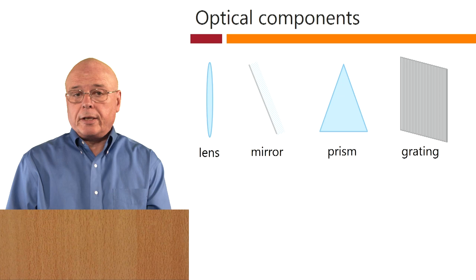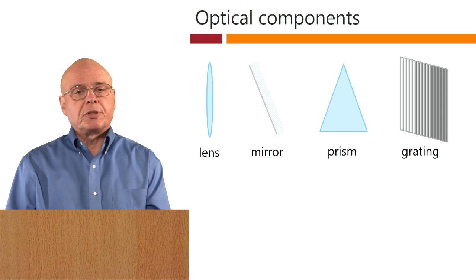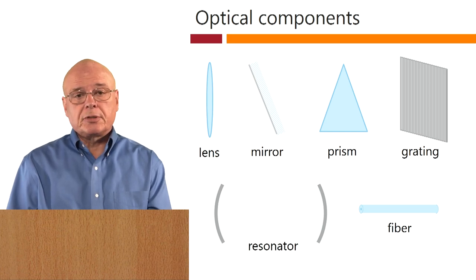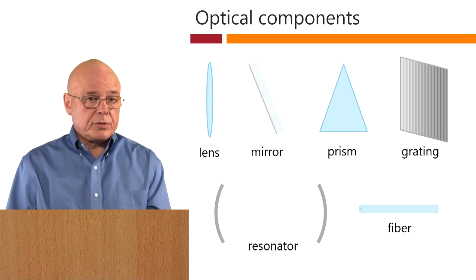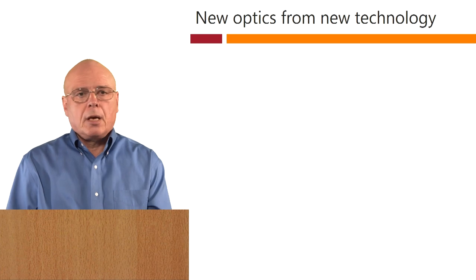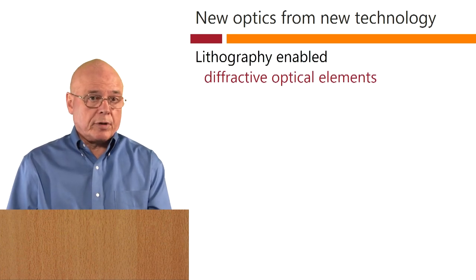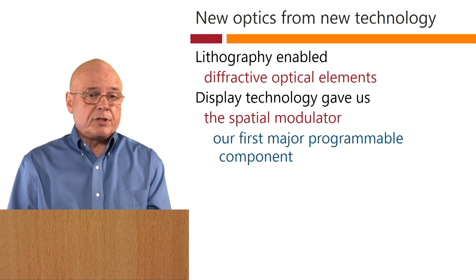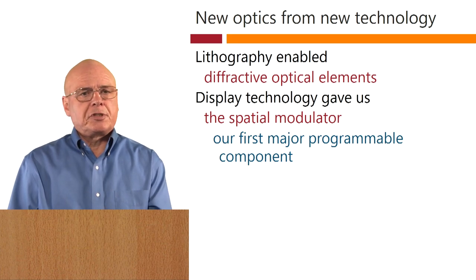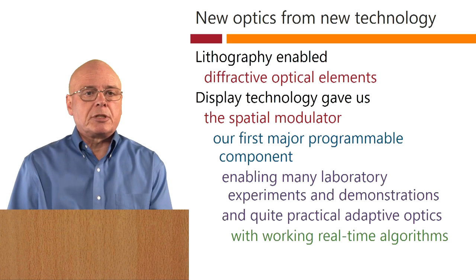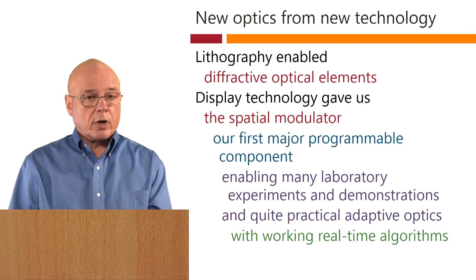We are all very used to the ideas of optics being lenses and mirrors and prisms and gratings, and those remain very useful ideas to this day. We added into these the ideas of resonators and optical fibres in the 1960s and 1970s, and those added the idea of modes into optics. But with this new technology we've started to get, first of all, lithography giving us diffractive optical elements. And display technology gave us the spatial light modulator, which was our first major programmable component in optics, and that enabled many laboratory experiments and demonstrations, and quite practical adaptive optics with working real-time algorithms.